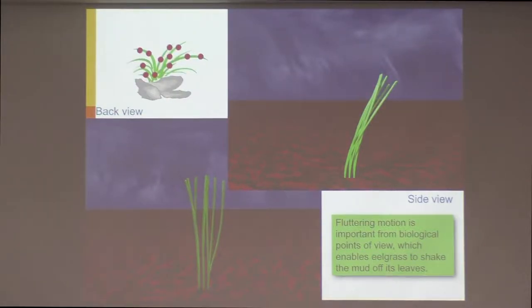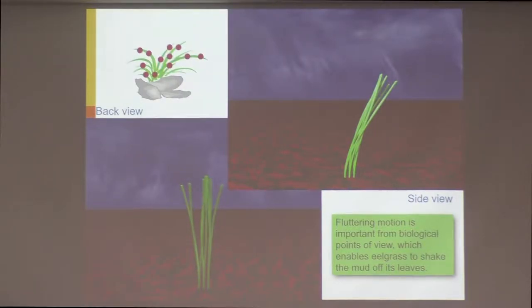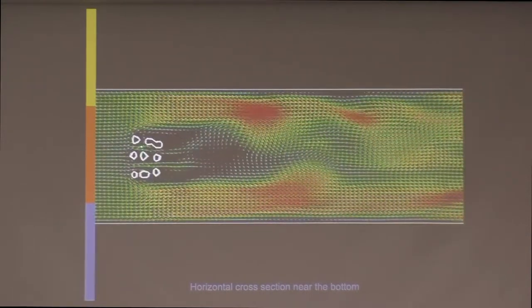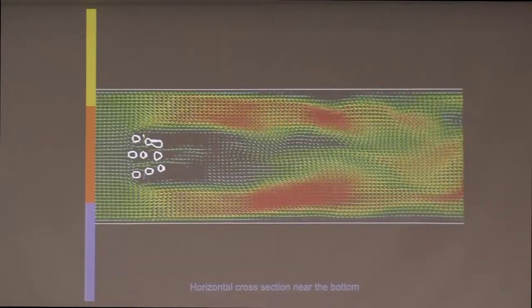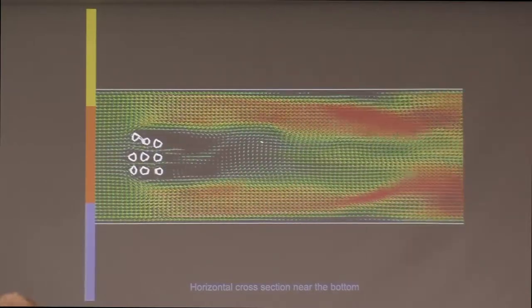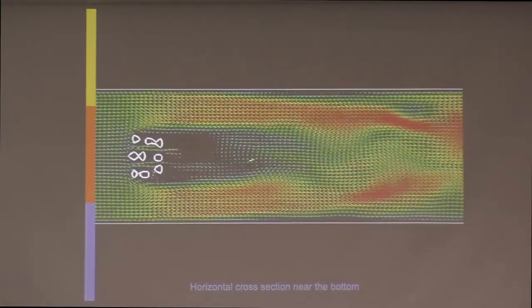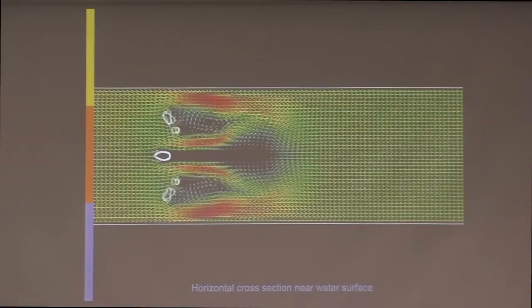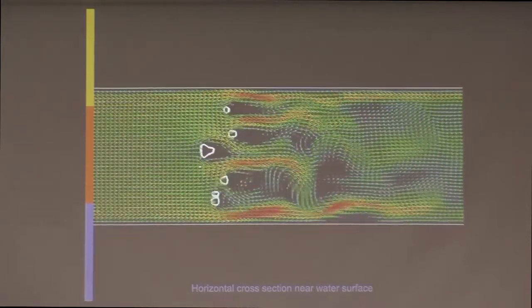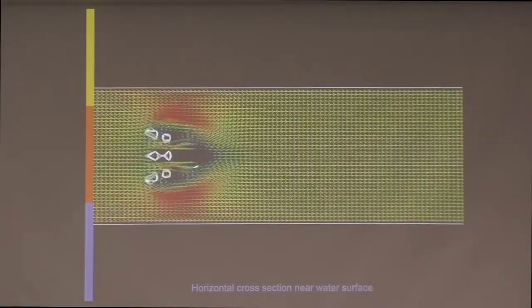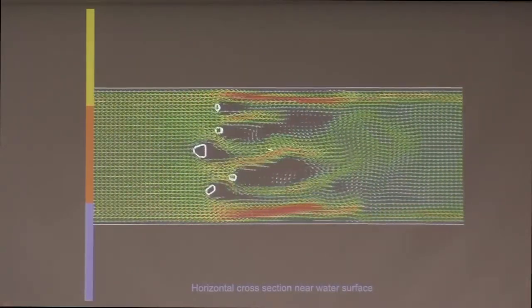This kind of fluttering motion is important from a biological point of view because it enables eel grasses to shake the mud off their leaves. Looking at the horizontal cross section near the bottom, for the nine eel grasses you can see the iso-lines of the characteristic function and a Kármán vortex-like structure downstream of the eel grasses. Near the water surface, the eel grasses can move more freely and a more complex structure can be seen downstream.